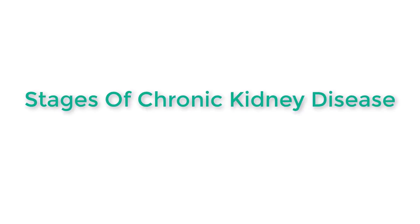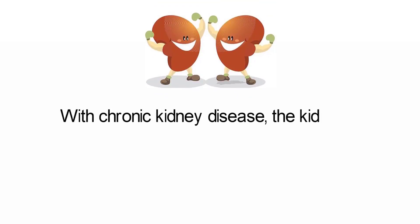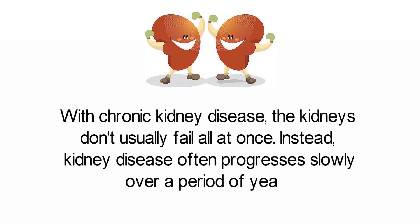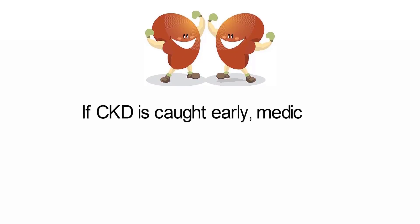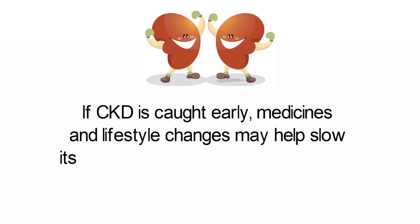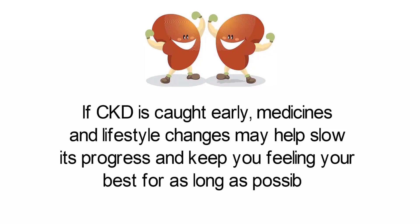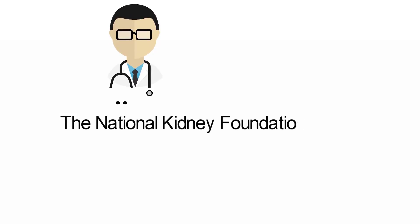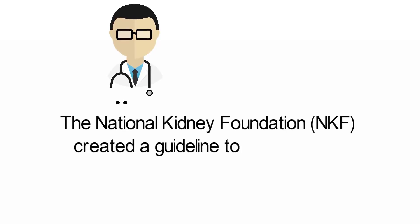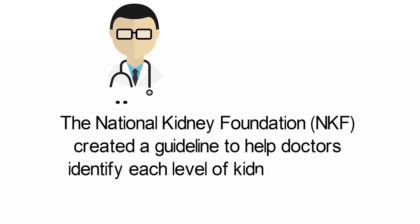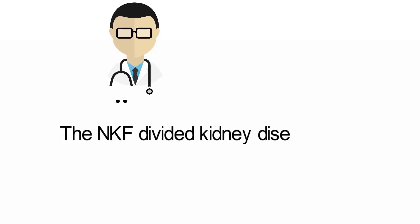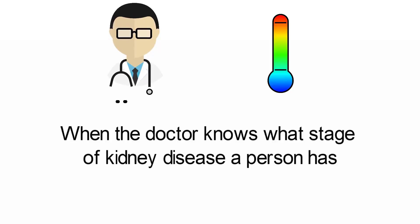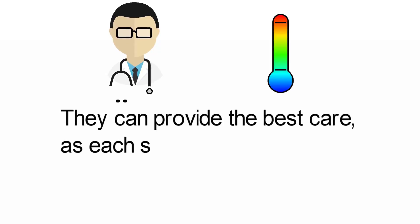With chronic kidney disease, the kidneys don't usually fail all at once. Instead, kidney disease often progresses slowly over a period of years. This is good news because if CKD is caught early, medicines and lifestyle changes may help slow its progress and keep you feeling your best for as long as possible. To improve the quality of care, the National Kidney Foundation (NKF) created a guideline to help doctors identify each level of kidney disease, dividing it into five stages, each calling for different tests and treatments.